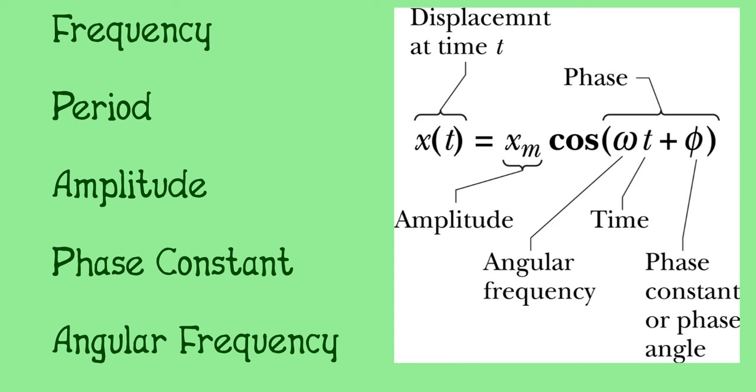Again, angular frequency and phase constant have units dealing with radians. Angular frequency is in radians per second, whereas phase constant is in radians.